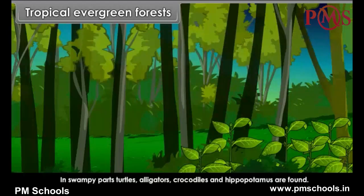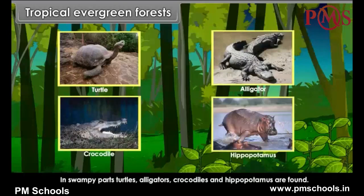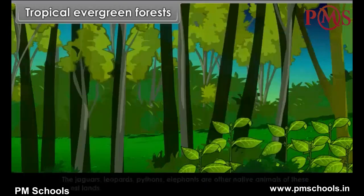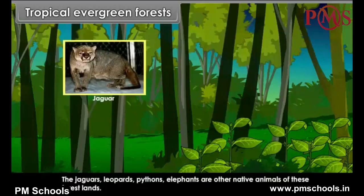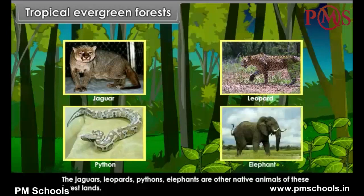In swampy parts, turtles, alligators, crocodiles and hippopotamus are found. The jaguars, leopards, pythons and elephants are the other native animals of these forest lands.